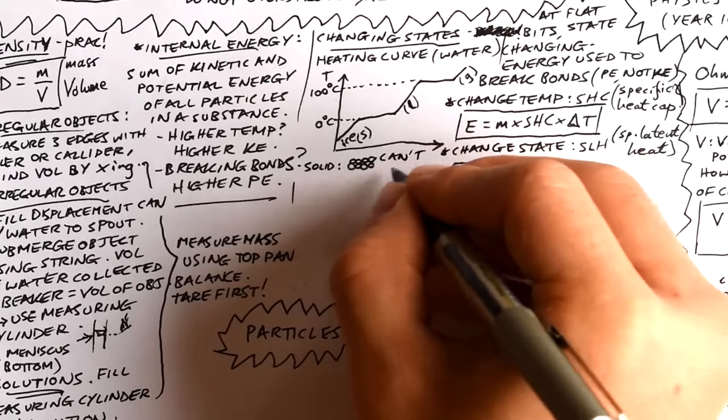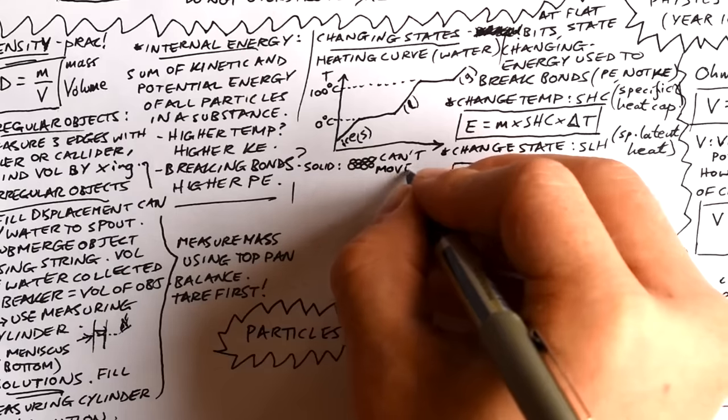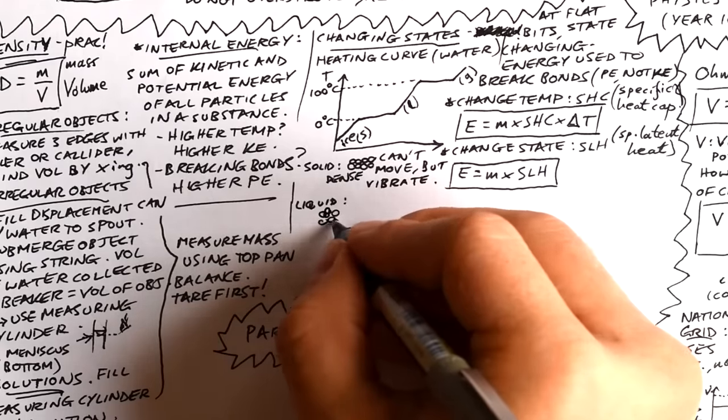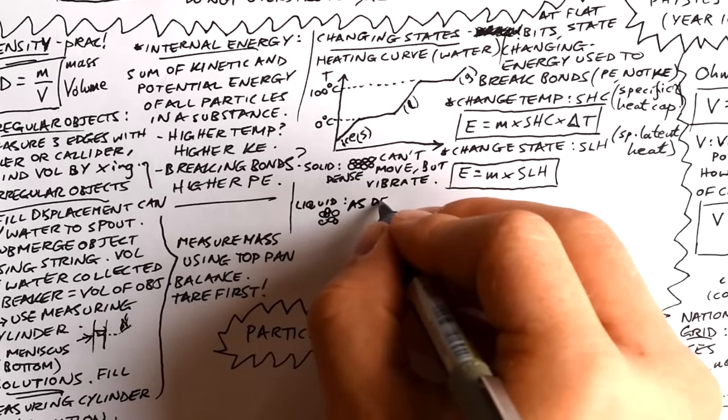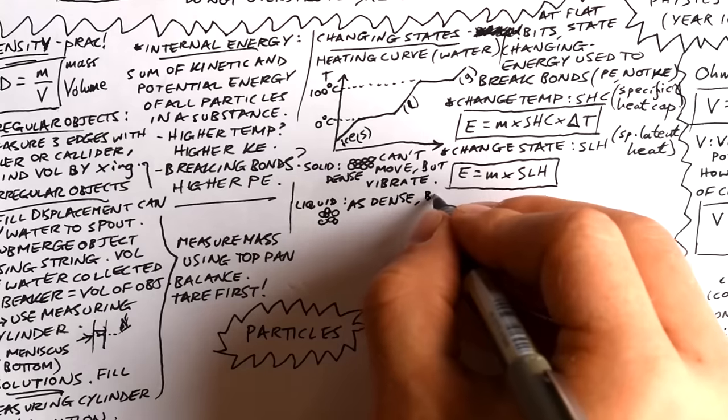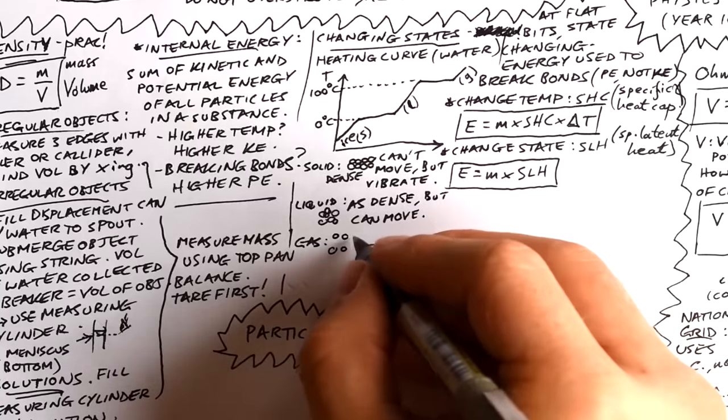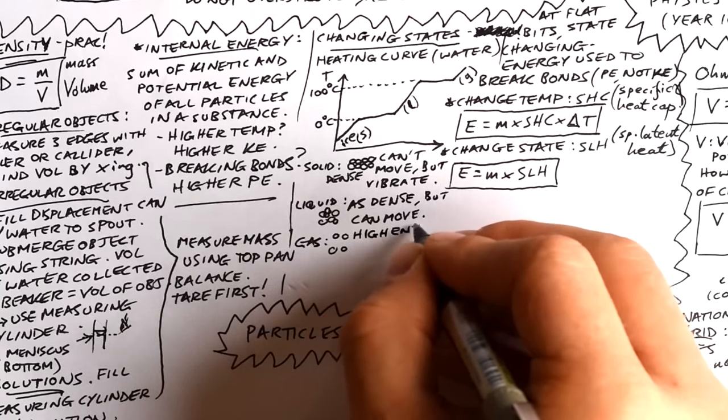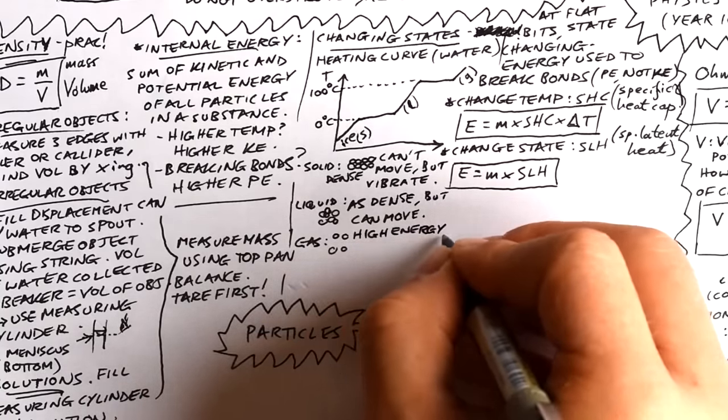Of course, you know this from key stage three, particles in a solid are close together. They're in a nice organized pattern. They could be in a lattice. They can't move, but they can vibrate. In a liquid, they're just as packed together, but they can move around. In a gas, however, the particles are far apart. They have lots of energy and they're flying around real fast and we say that there's basically no potential energy there. It's all kinetic energy.